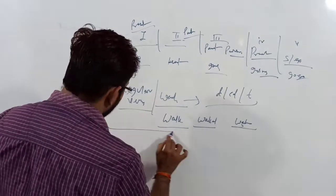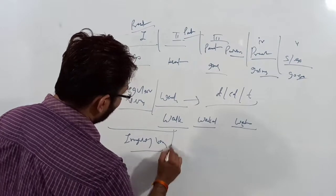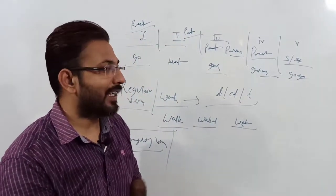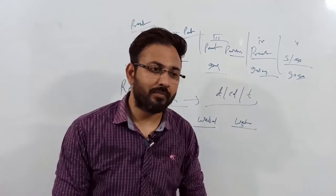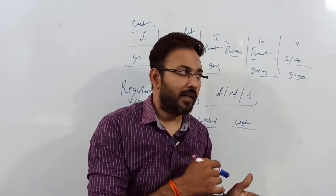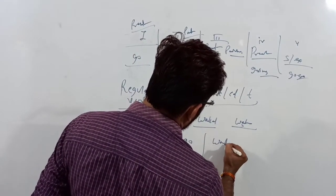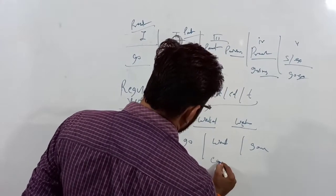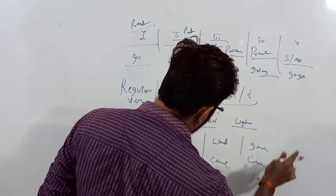Irregular verbs are also called strong verbs. For irregular verbs, the past and past participle forms change through internal vowel changes rather than adding -ed. Examples: go, went, gone; come, came, come; see, saw, seen.